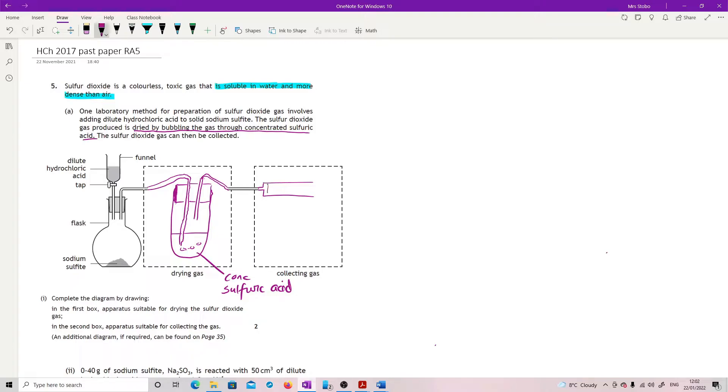If you go with a gas syringe and you just keep it much neater than I'm managing to draw, label it so it's clear what you're doing, and then you can label here your collected SO₂.